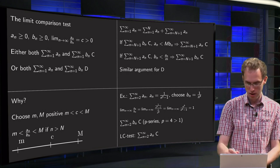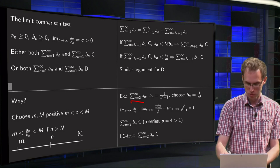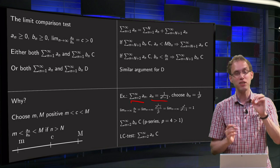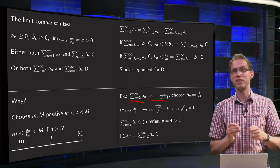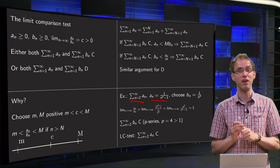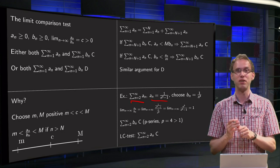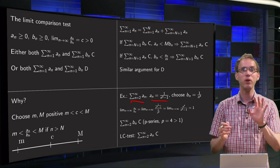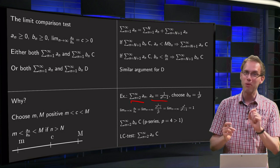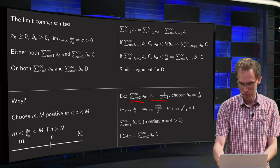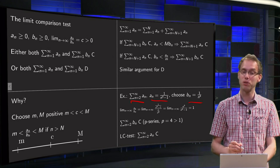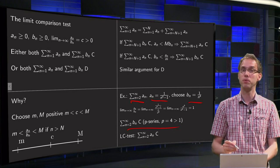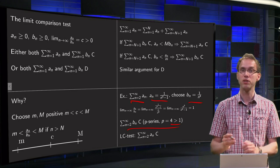Let's look at an example, one which we encountered before: the sum from n equals 2 to infinity where a_n equals 1 over n to the power 4 minus 1. We did this one already using the integral test, which was quite involved because the antiderivative required factorization and taking limits. We ended up with a convergent series. Now let's use the limit comparison test instead. We choose b_n equals 1 over n to the power 4. We know that the sum of b_n converges — it is a p-series with p equals 4, greater than 1, so it converges.